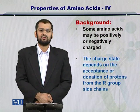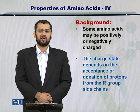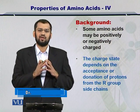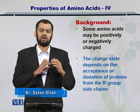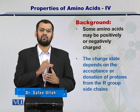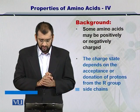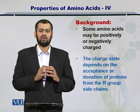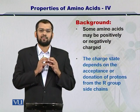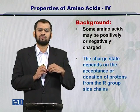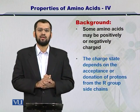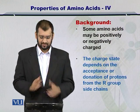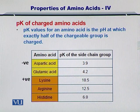Some of the amino acids can be positively charged and some of them are negatively charged. These charge states vary with the pH, because at low pH a lot more protons would be available as opposed to a high pH. So the charge state of an amino acid is essentially the property of the R group — its ability to accept protons or donate protons — and that is how the overall charge of an amino acid can be determined. For that we need to understand the concept of pK value.